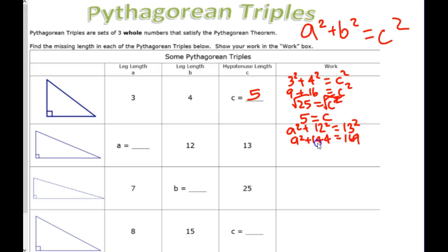13 squared is 169. If I'm solving for A, the 144 has got to go. So, yeah, I'm going to subtract 144.